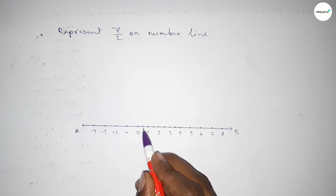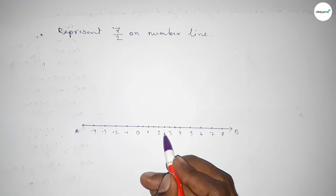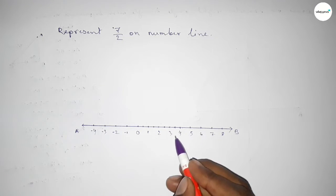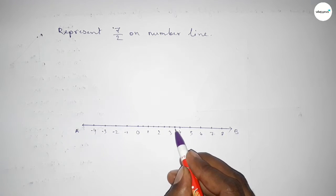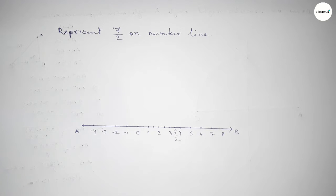So this is half between zero to 1, this is half between 1 to 2, and this is half between 2 to 3, and this is half between 3 to 4. So this is 7 over 2.